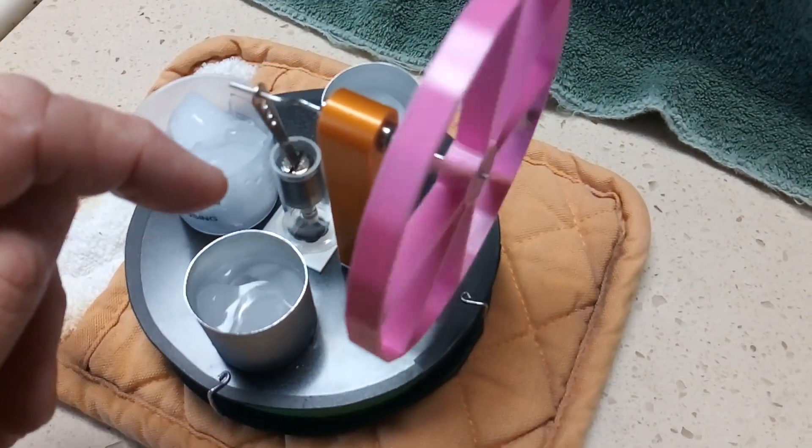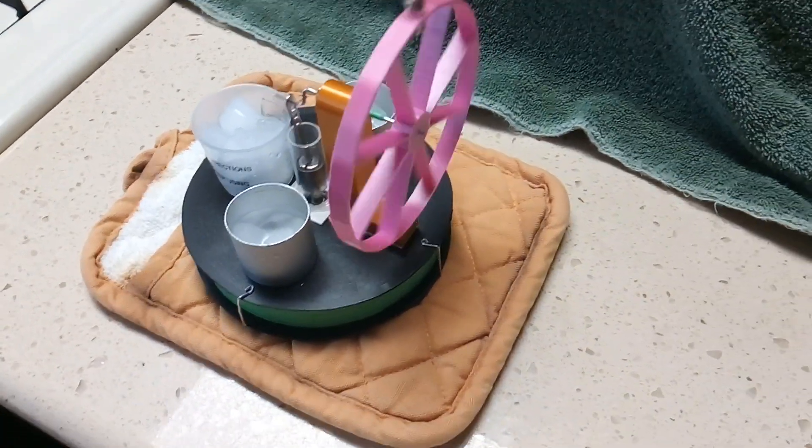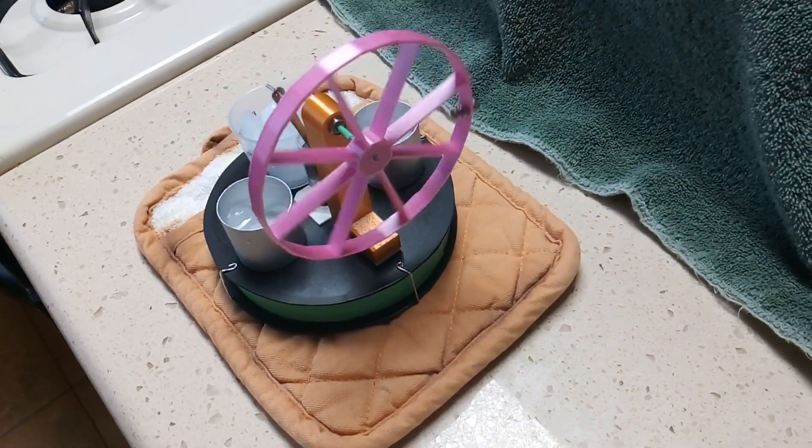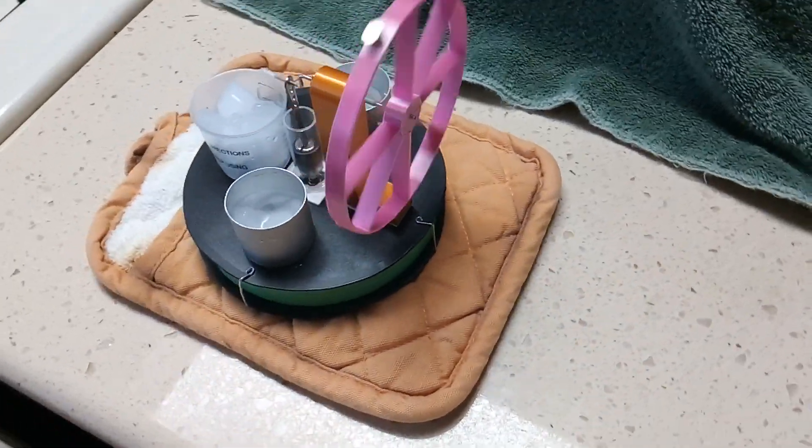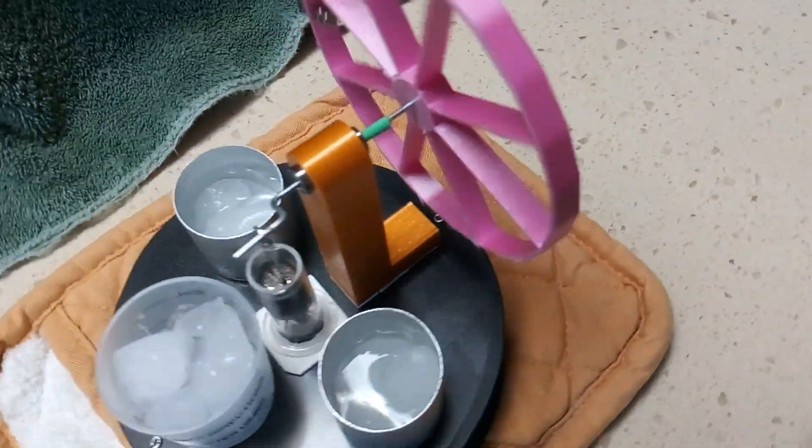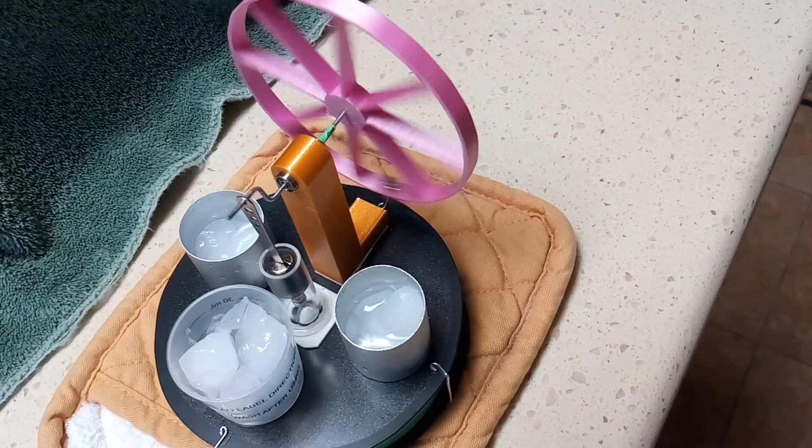The plunger picks up the magnet on the displacer, moves it up and down, and moves the hot air up and down. But anyway, this is running on ice, so I'm calling this the Sterling engine on the rocks.